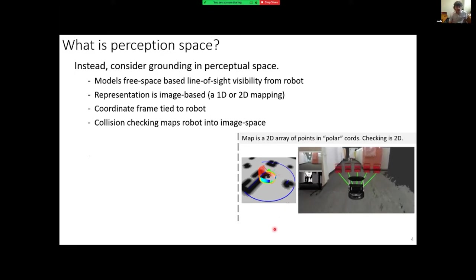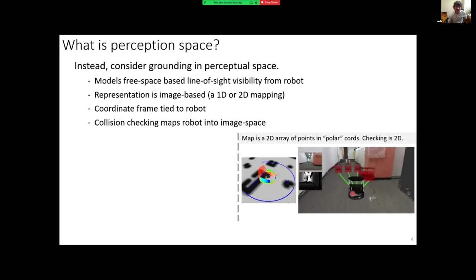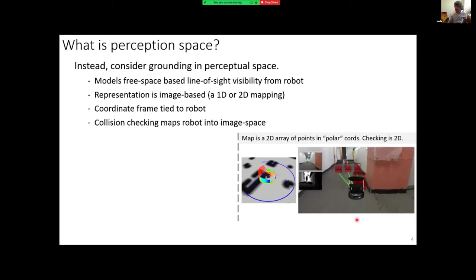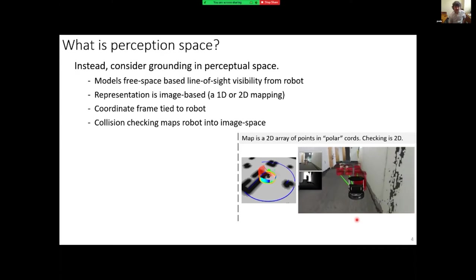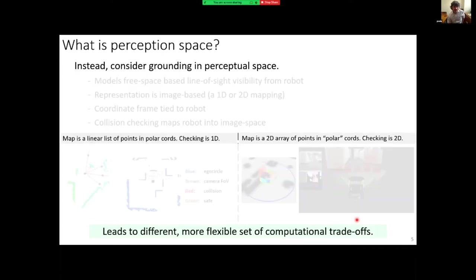The circular image tells you what free space exists. On the right it depicts how you can test trajectories — as sample trajectories get close to obstacles they shrink, indicating the robot can only navigate collision-free up to that point. This leads to a very different set of computational trade-offs that tend to be more flexible than the traditional approach.